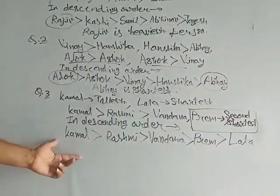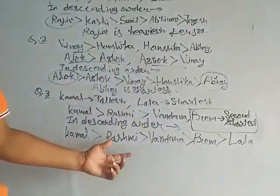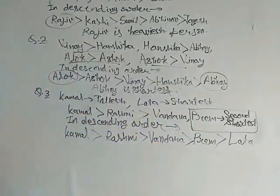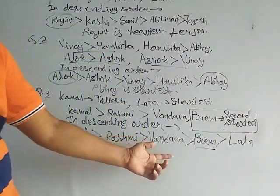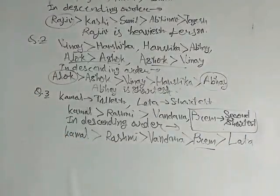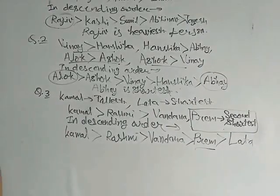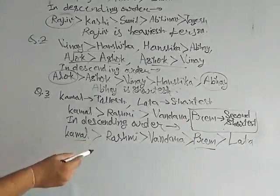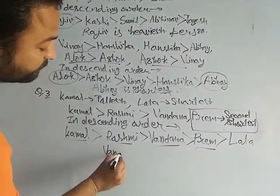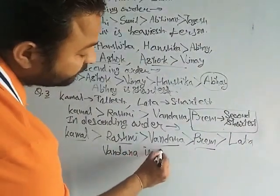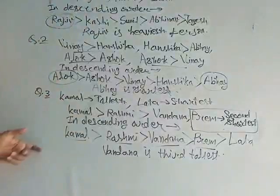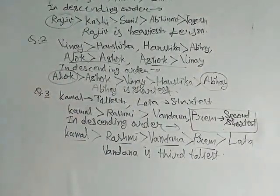Kamal is the tallest, Lata is the shortest, Rasmi is shorter than Kamal but taller than Vandana and Prem, and Prem is the second shortest. All conditions are satisfied. The question asks who is the third tallest — first tallest is Kamal, second tallest is Rasmi, third tallest is Vandana.